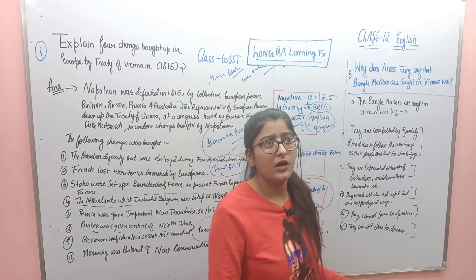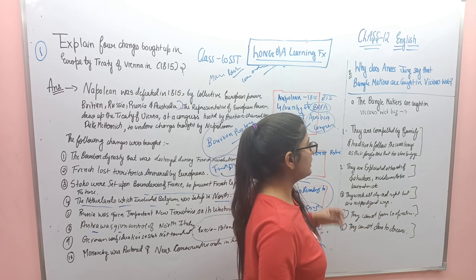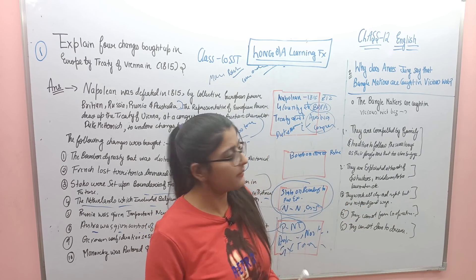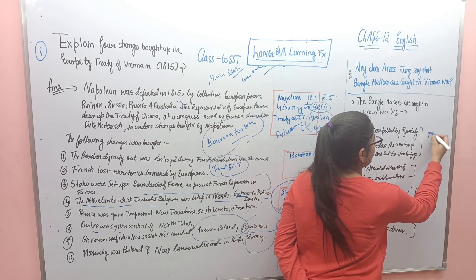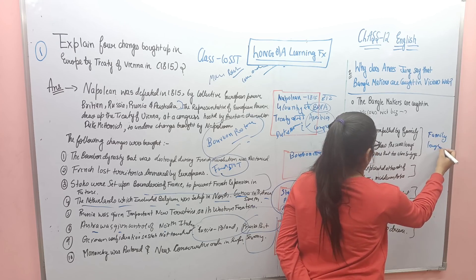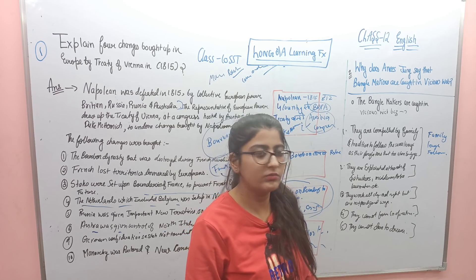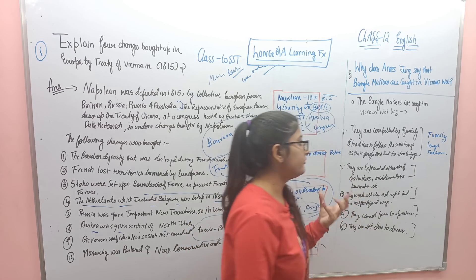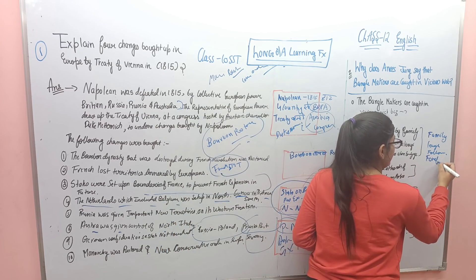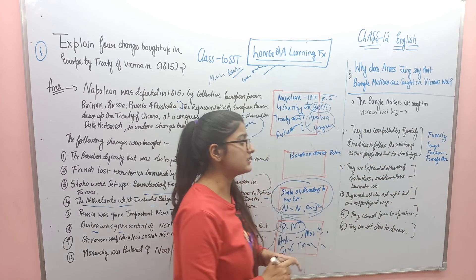Matlab — unhe compelled kiya jaata hai jo unki family lineage hai. Desi se — agar aapke papa halwai hain toh aap sweet shop jaoge, aur agar aapke father ek bade businessman hain toh tum bhi apne shop pe baithoge. In bachon ko compelled kiya jaata hai glass making factory mein jaane ke liye. Keyword: 'family lineage follow.'